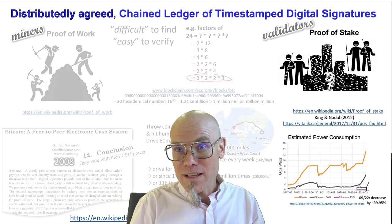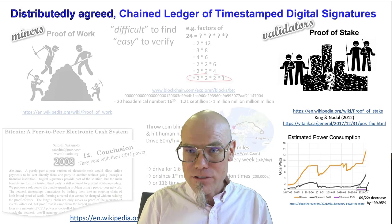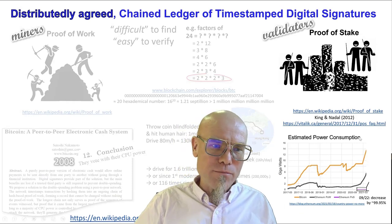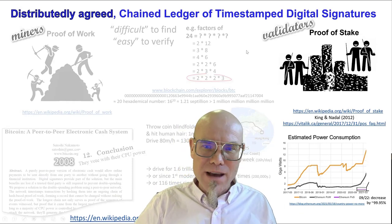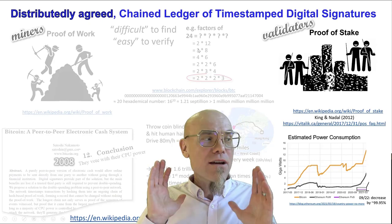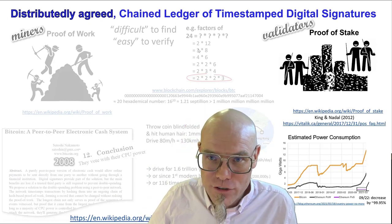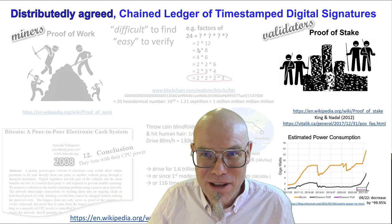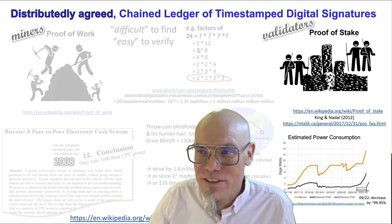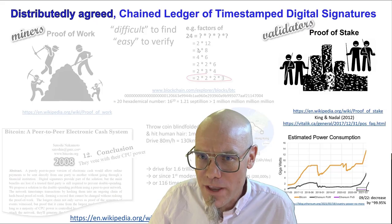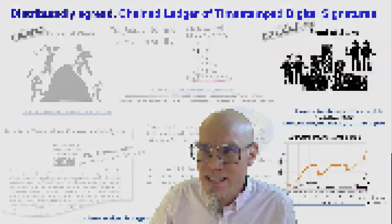In proof of stake, we call them validators — we put the chips in the middle and validate. In proof of work, we call them miners; here we call them validators. There are many more ways of creating consensus — as many ways to agree as to disagree, and there are many ways to disagree. But these are the two most important consensus algorithms.